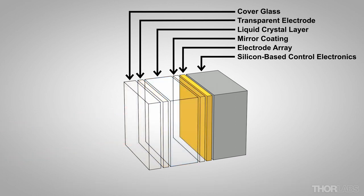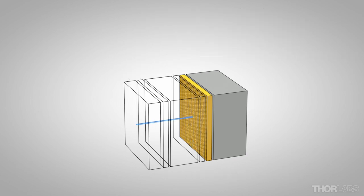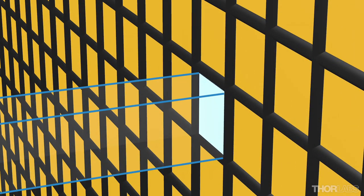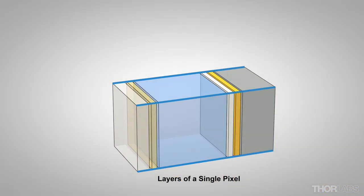On the other side of the mirror coating is an array of electrodes, which divide the liquid crystal layer into individual pixels that can be controlled independently of one another. The control is provided by silicon-based circuitry that customizes the voltage applied across each pixel.